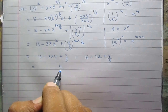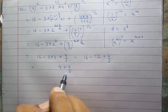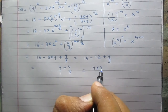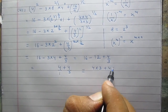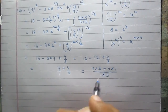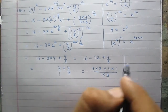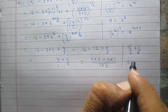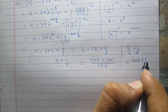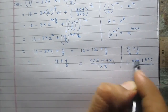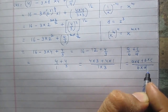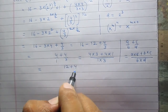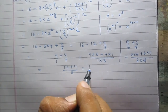16 minus 12 is 4, so we have 4 plus 4/3. Writing 4 as 4/1 and using the rule A/B + C/D = (A×D + B×C)/(B×D), we get (4×3 + 1×4)/(1×3), which simplifies to (12 + 4)/3 = 16/3. This proves the left-hand side equals 16/3.